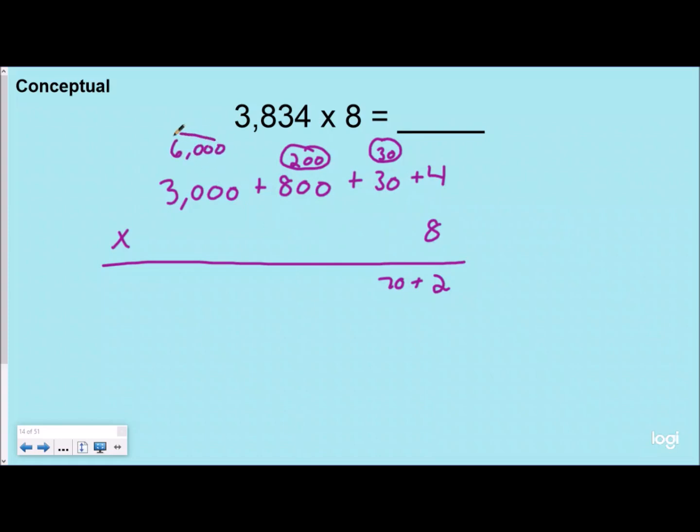And then we have 8 times 3,000, which is 24,000, but we want to add our 6,000 to that, which actually makes it 30,000.